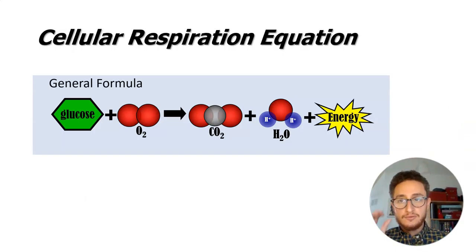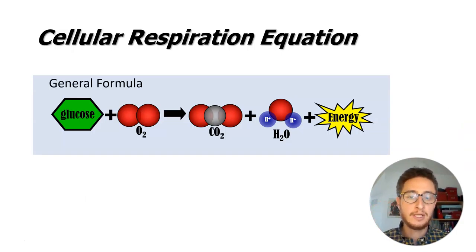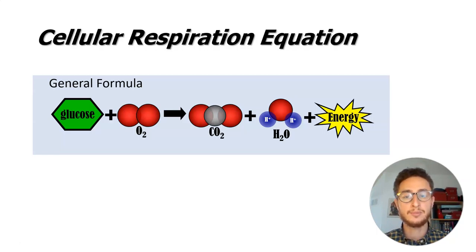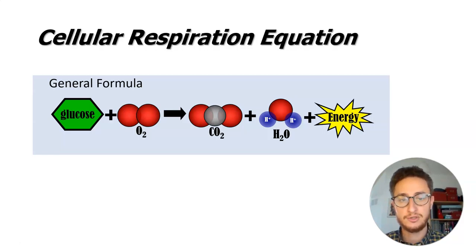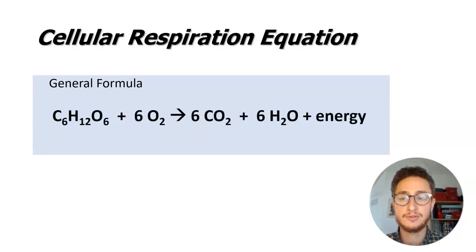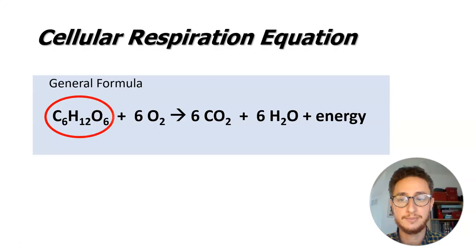Here's the overall reaction for cellular respiration: we take glucose, combine it with oxygen, and we release CO₂ and water. The entire purpose is that we're also releasing the energy from glucose — hopefully trapping most of it, though some will be released as heat.